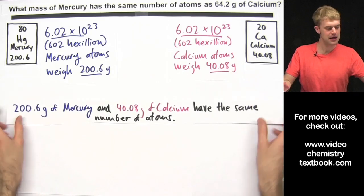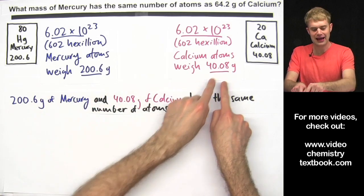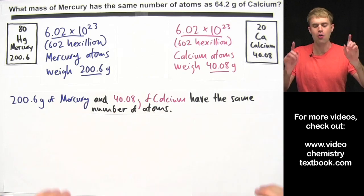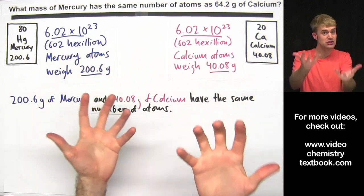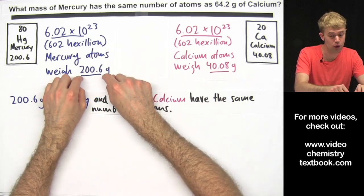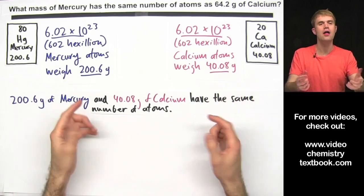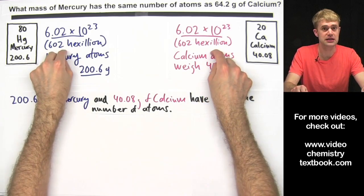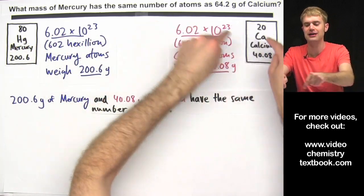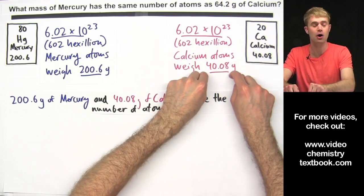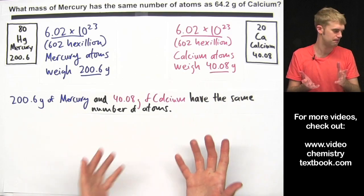The main point is that 200.6 grams of mercury and 40.08 grams of calcium both have the same number of atoms. The masses are different — mercury weighs a lot more, calcium is lighter — but even though the masses are different, the number of atoms is the same, because 602 hexillion mercury atoms weigh 200.6 grams and 602 hexillion calcium atoms weigh 40.08 grams.